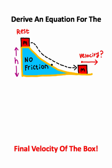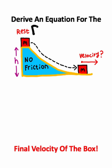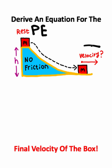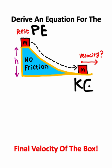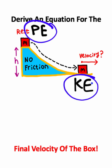To solve this problem, we recognize that we are at rest on top of this hill, so at this point we have maximum potential energy. The box then slides all the way down the hill and moves with its highest velocity at ground level, which means we have maximum kinetic energy at the end of this descent. Based on the laws of conservation of energy, the initial potential energy equals the final kinetic energy.